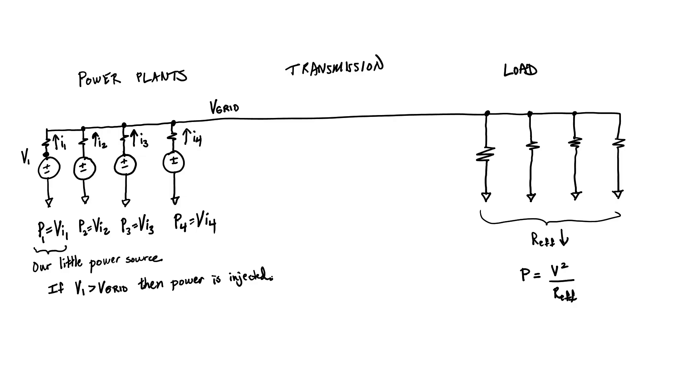If our little power supply is not so little and is in fact a major power plant, then voltage V1 can be a little bit higher than the grid voltage. In other words, after our power source is actually attached to the grid, the voltage at the grid, voltage V sub grid actually increases ever so slightly. In other words, it takes power to raise the grid voltage.